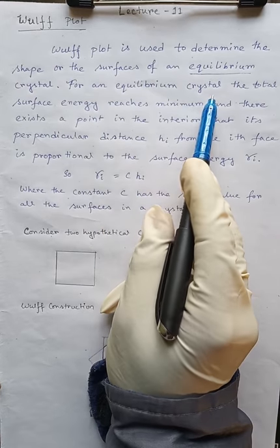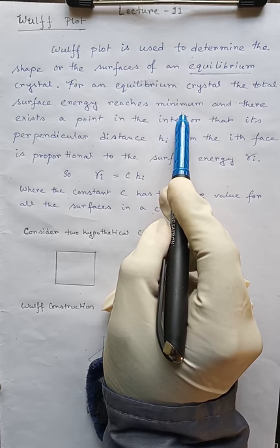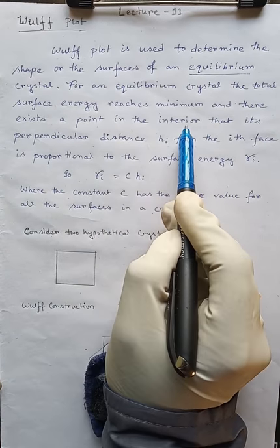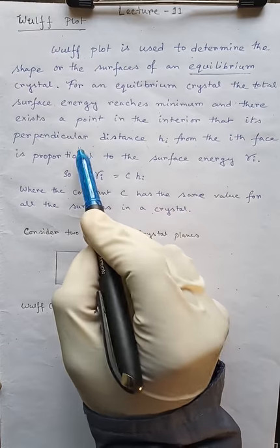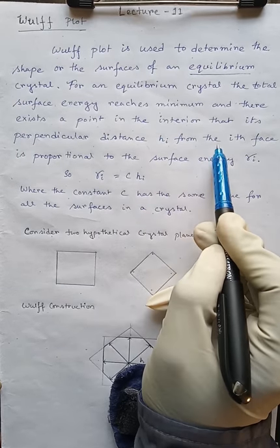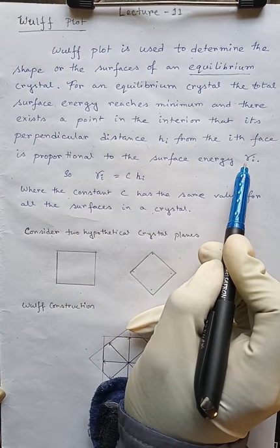For an equilibrium crystal, the total surface energy reaches minimum and there exists a point in the interior that its perpendicular distance h_i from the i-th phase is proportional to the surface energy gamma_i.